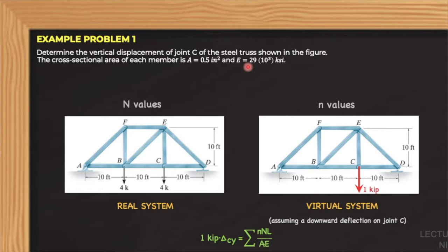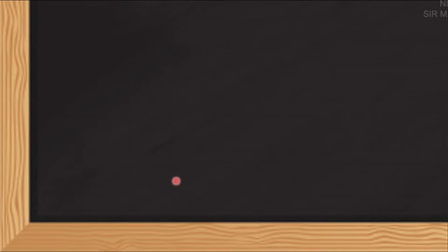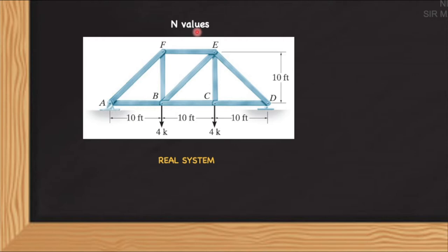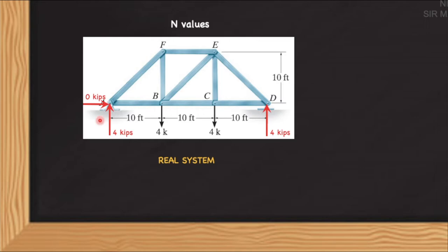Let us first analyze the real truss to get the values of uppercase N, the member forces. We need to use the method of joints since all member forces need to be determined. We first compute the reactions at the supports using equations of equilibrium. The reactions at A are 4 kips vertical and 0 kips horizontal, as it is a pin support. The reaction at D, which is a roller, is 4 kips. Through the method of joints, we can then compute the forces in each member.